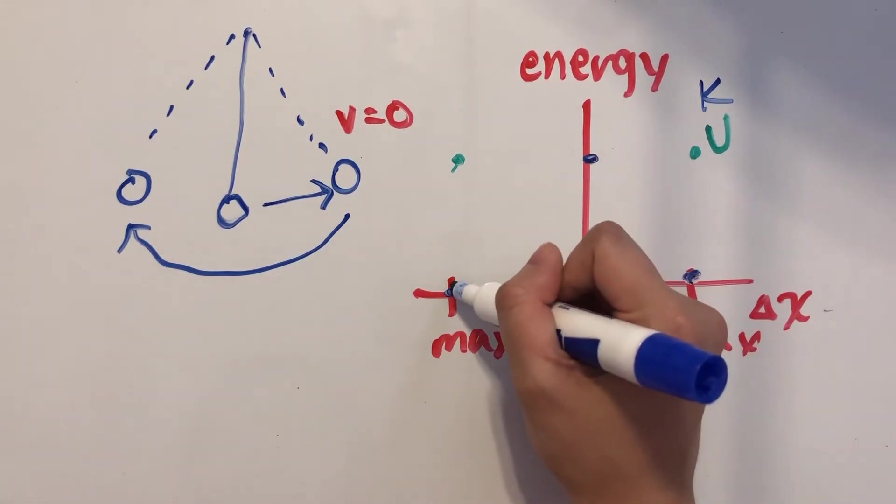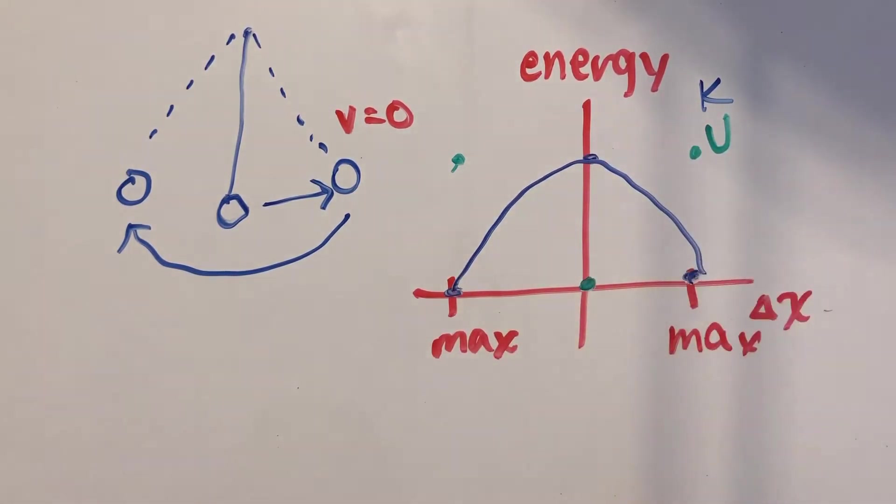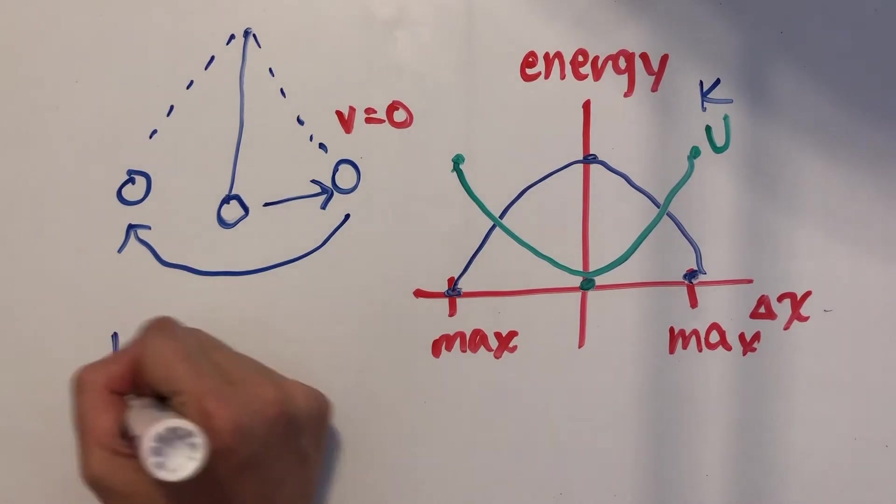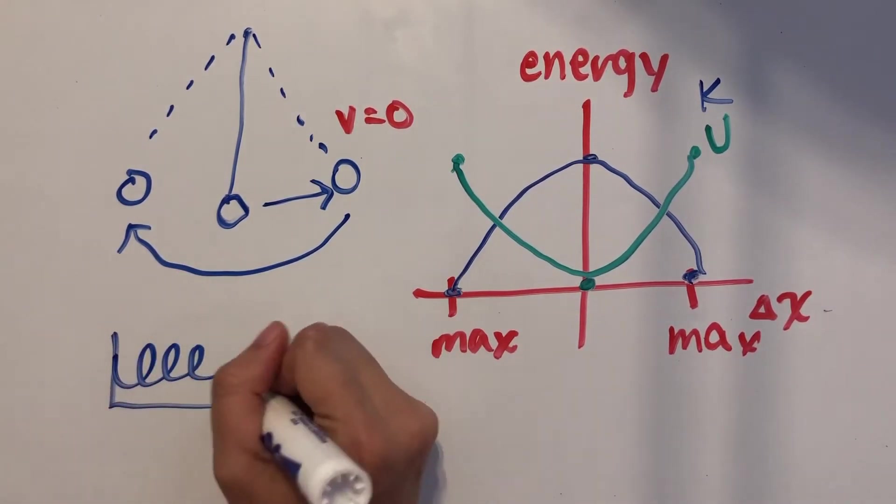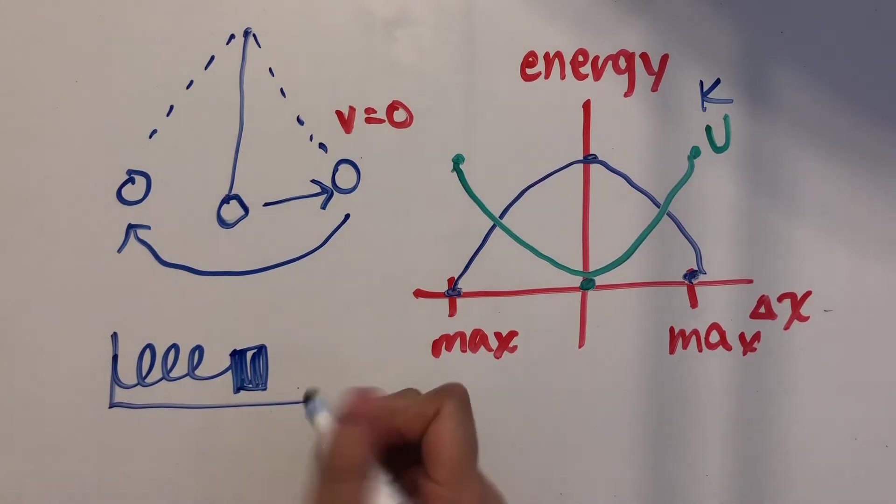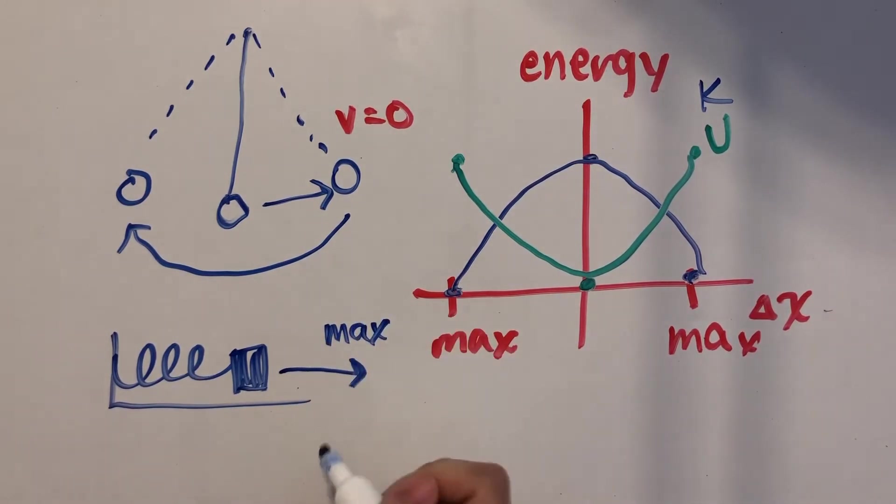So connecting all of these dots would give us a graph that looks something like this. And this graph can be applied to springs too. So if we had a spring with a mass attached to the end of it, and this was the equilibrium position, if I pulled the mass back by a certain distance, then it would have its greatest amount of spring potential energy at the maximum displacement position.